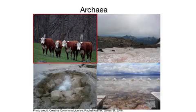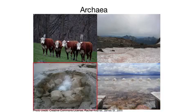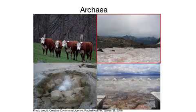Many archaea live in extreme environments and can use unique compounds such as sulfur for food. For example, methanogens live deep in the digestive tract of many mammals and produce methane as waste when they make energy. Halophiles are archaea that live in salty environments like salt flats — saltier than seawater. Seawater is approximately 0.9% salt, but halophiles can tolerate up to 9% salt. Thermophiles are archaea that live in extremely hot temperatures, above boiling, such as hot springs and deep sea vents. Finally, psychrophiles are archaea that live in extremely cold temperatures, below freezing, such as glaciers.